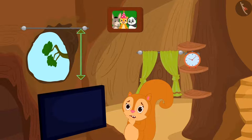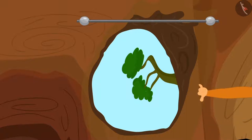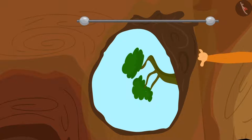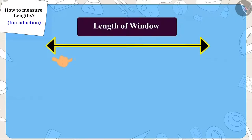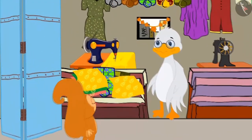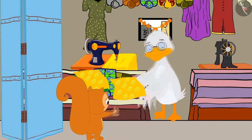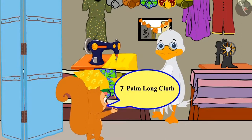Then Chanda thought of measuring the length of the window with her palm. She quickly measured the length of the window using her palms. The length of the window is equal to seven of Chanda's palms. Chanda reached uncle's shop all excited and chose a material of her choice.